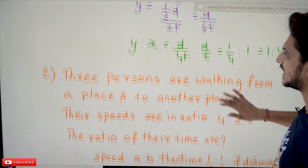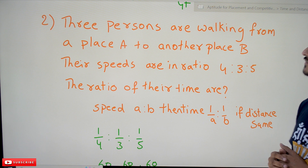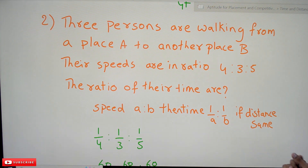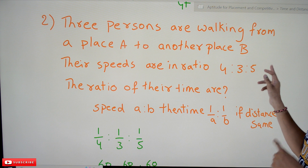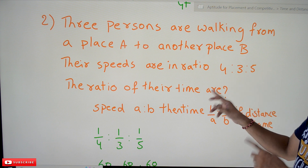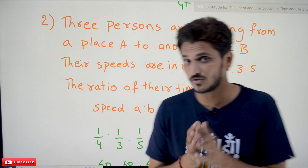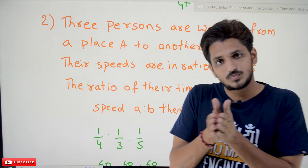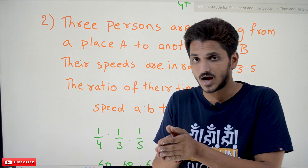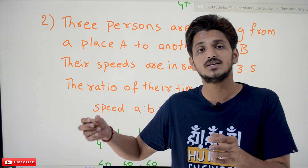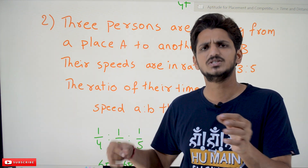Coming to the next example: three persons are walking from place A to another place B. Their speeds are in the ratio 4:3:5. The ratio of their times — as discussed in our last class using the formula — if the ratio of speeds is given as a:b, the ratio of the times is 1/a : 1/b, since speed is inversely proportional to time.